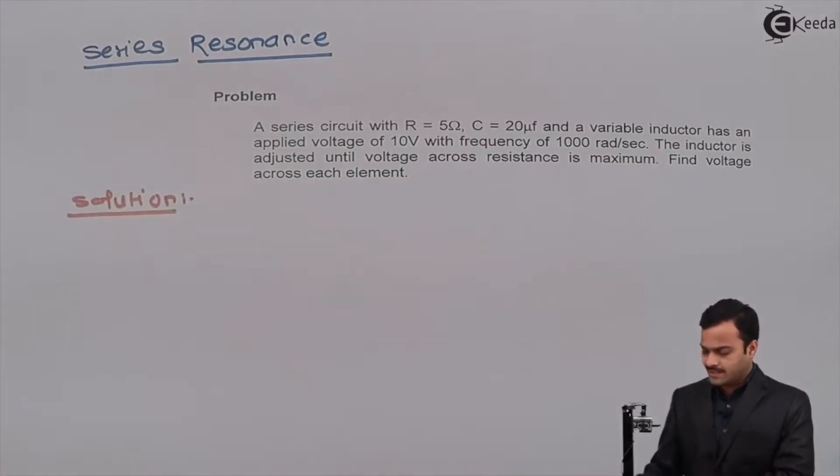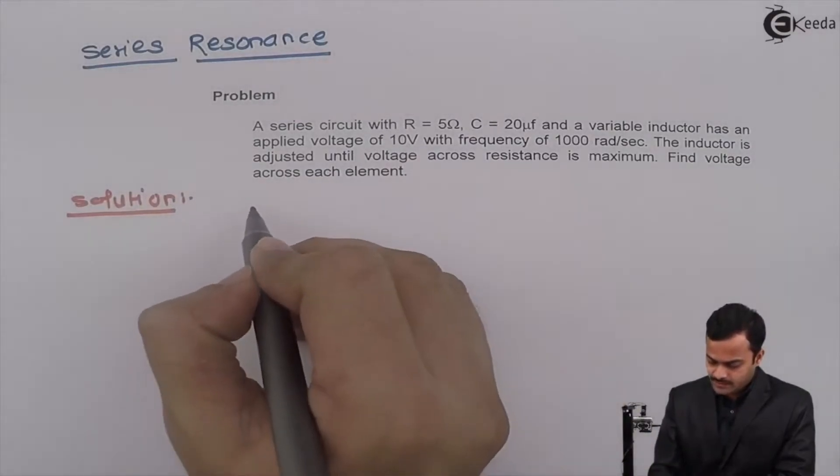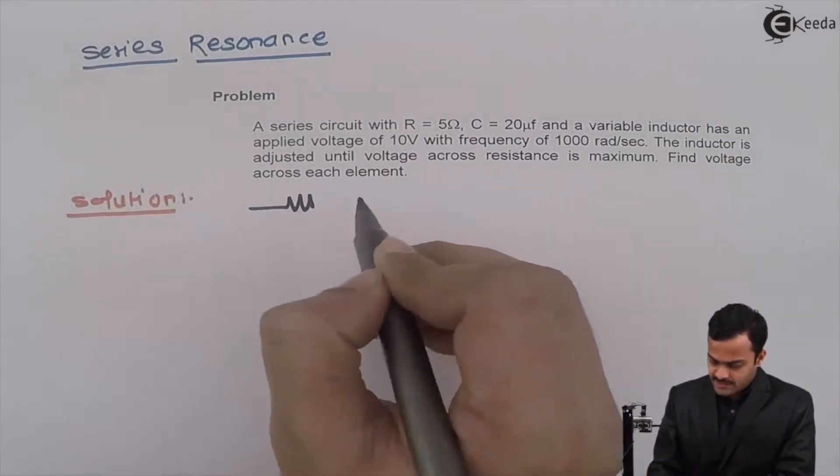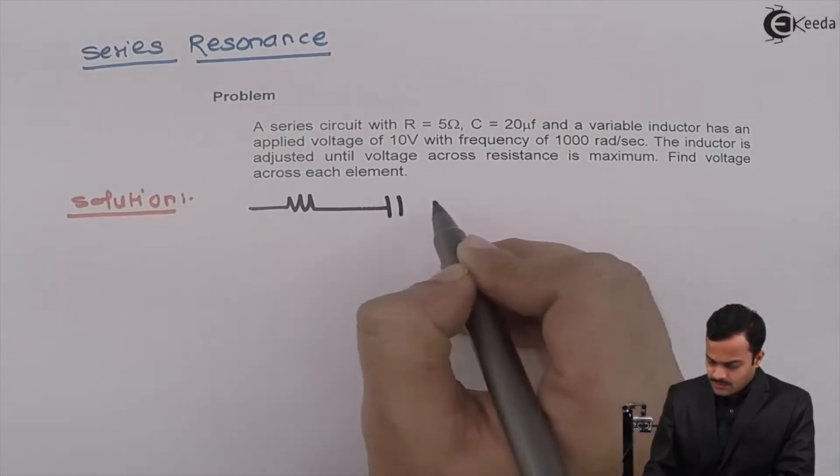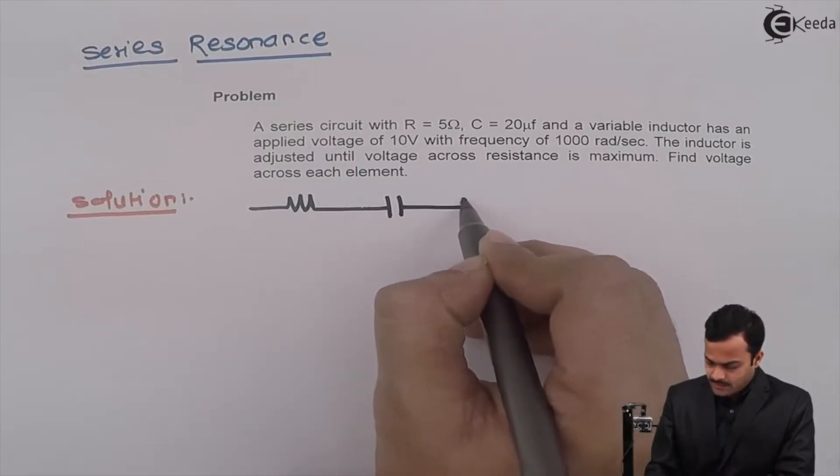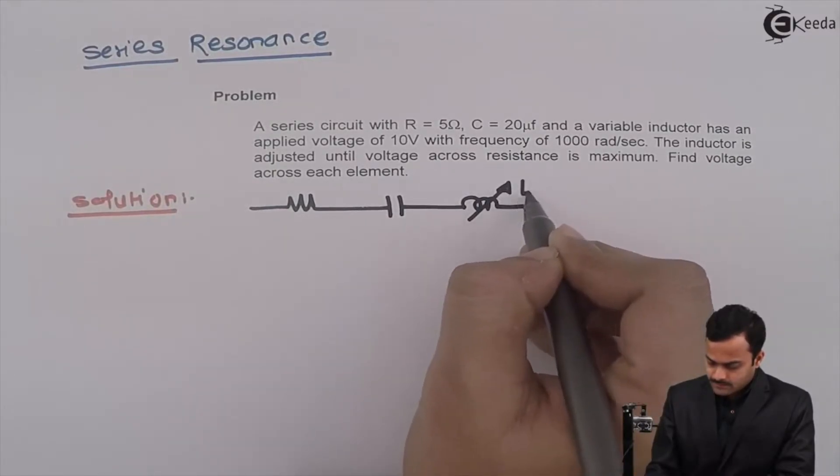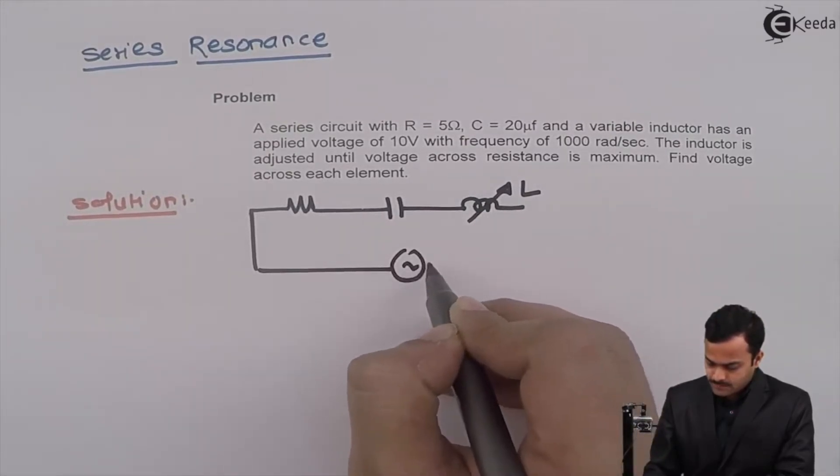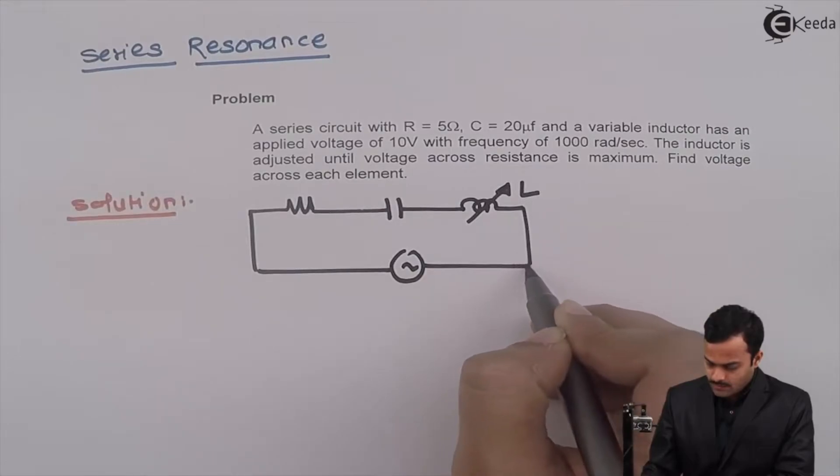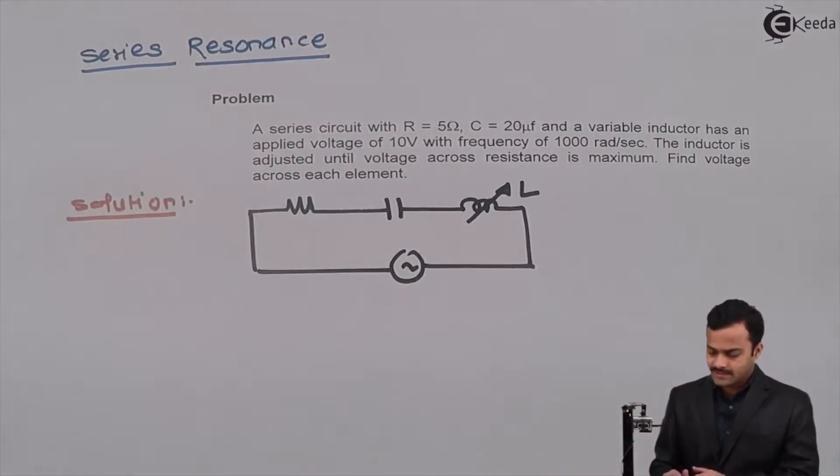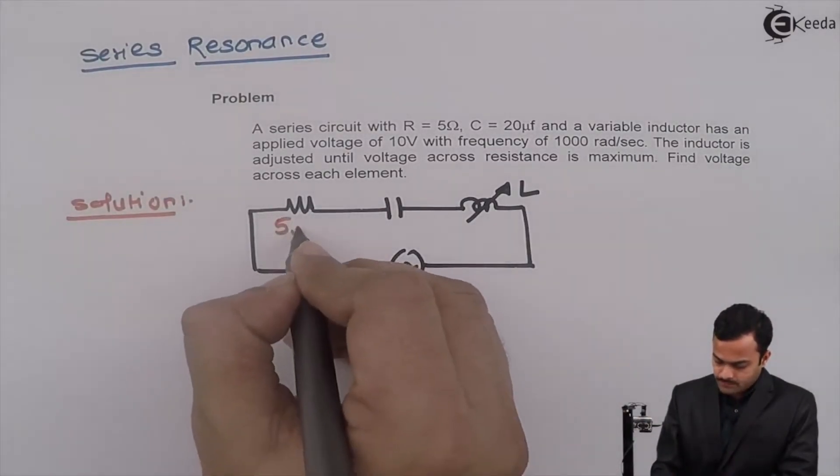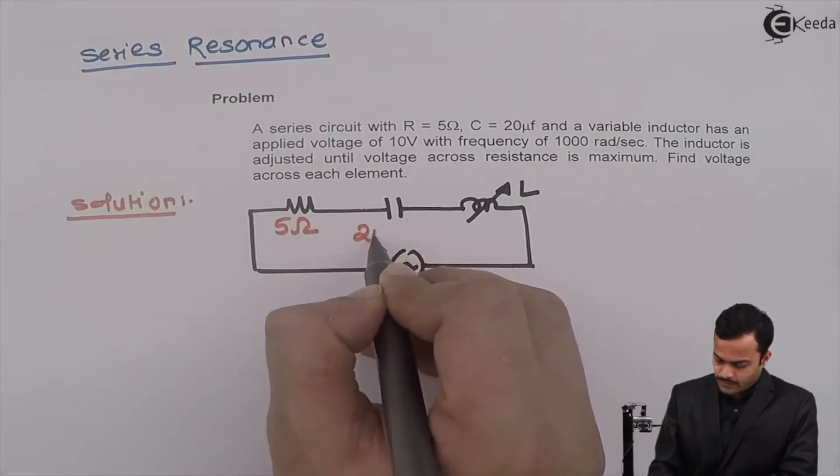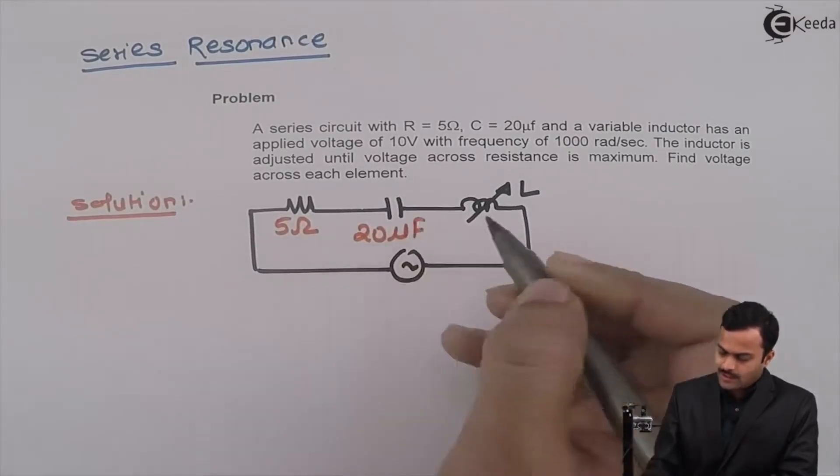Let us draw circuit diagram first. It is a series circuit given with resistance, capacitor and variable inductor connected to an AC supply. And values of elements are like this: R equal to 5 ohm, C equal to 20 microfarad, L is not given.